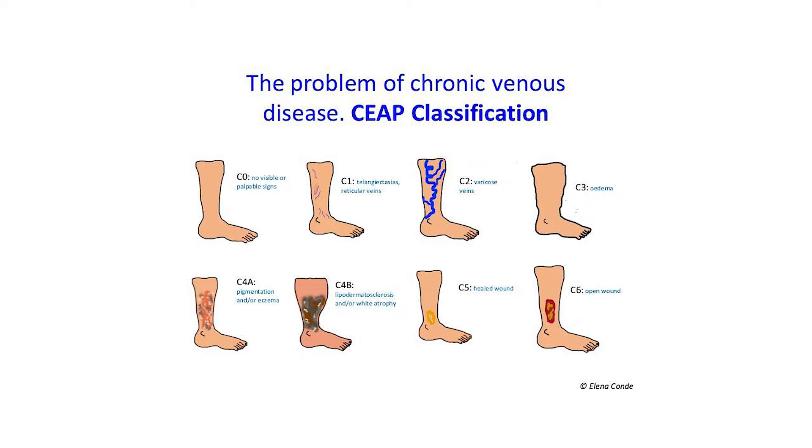Zero is the starting point. The last classification is the one you don't want to be in — C6, which refers to ulceration. The best thing you could take out of today's discussion is knowing where you'd be sitting in terms of your CEAP classification. That'll empower you and give you the knowledge required to take that first step.